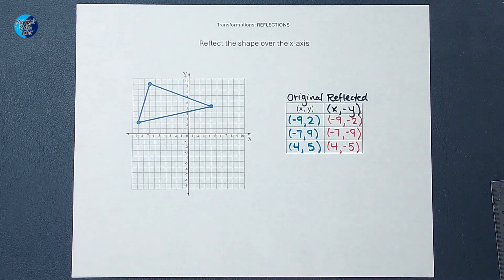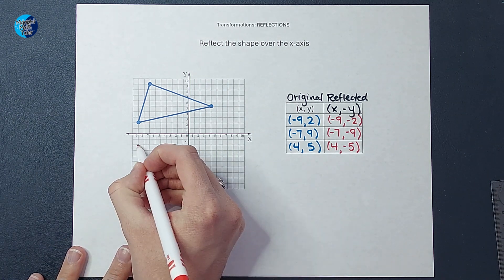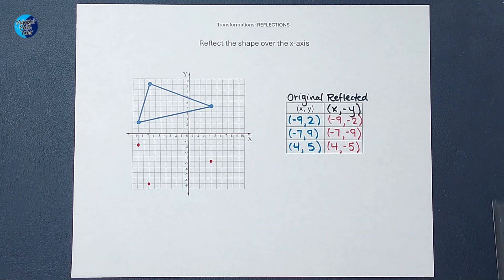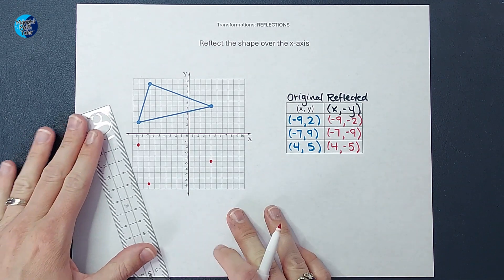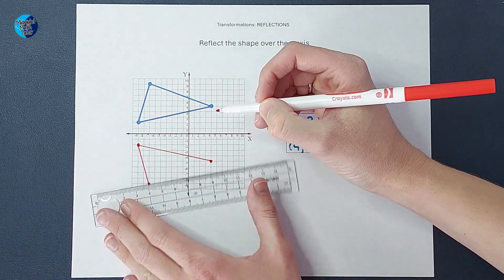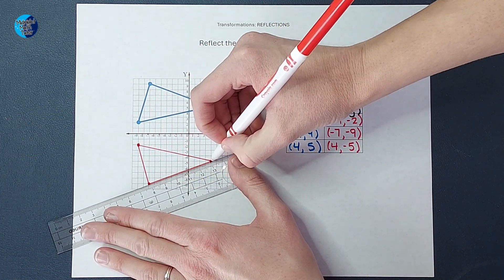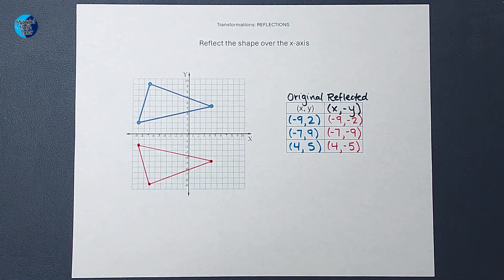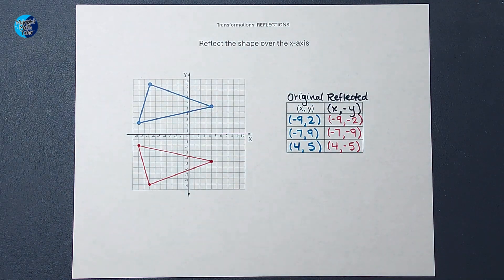Alright, now I'm going to go ahead and plot those points. Okay, there's my points. That's looking pretty good. Now I'm going to connect the dots. All right, there we go. Does that look like either that's a mirror or I folded it over the x-axis? I think it looks pretty good.